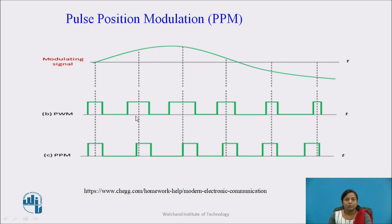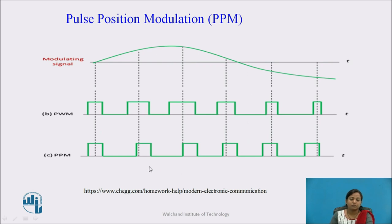Now, what is PPM? It is Pulse Position Modulation. Here, the amplitude and width of the pulses remain the same, but the position of the pulses changes according to the amplitude of the continuous time signal. The distance between each pulse is different and depends upon the amplitude of the modulating signal.